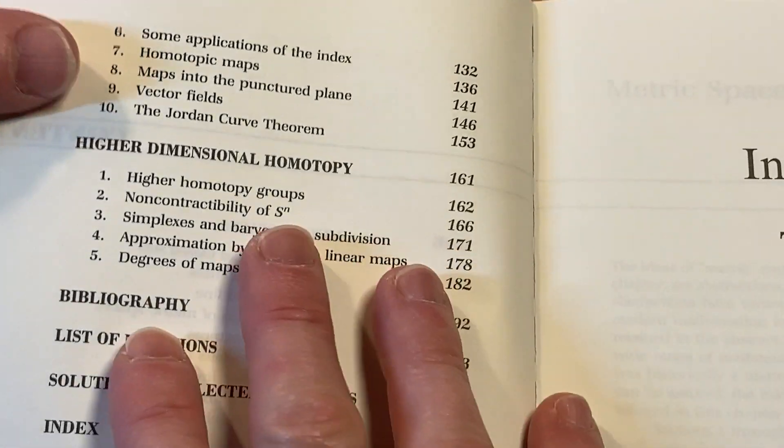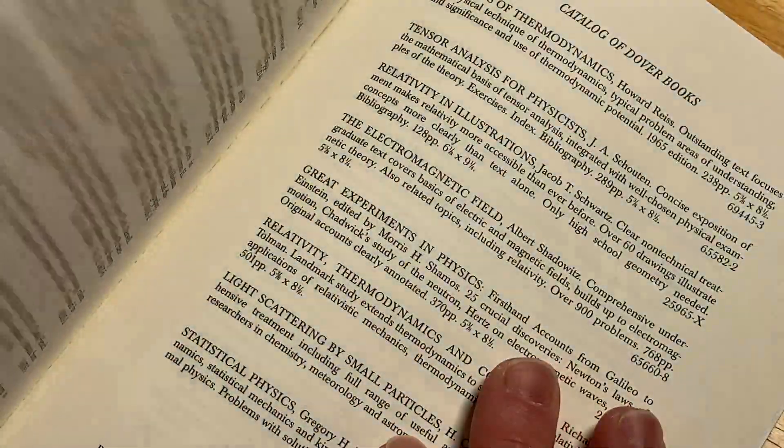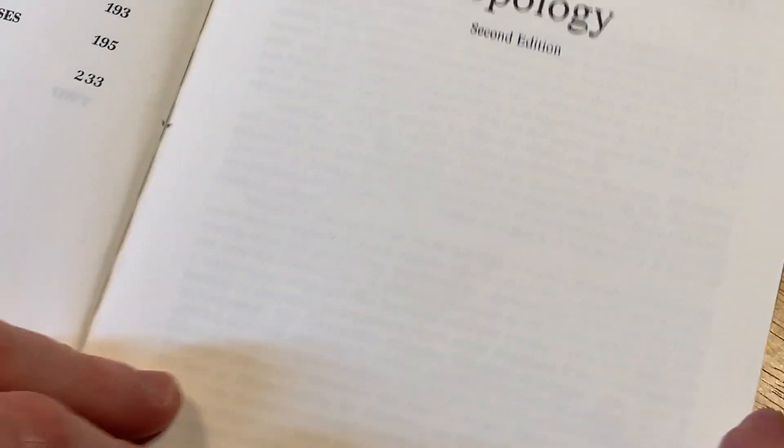Homotopy theory, okay? And then we have higher dimensional homotopy. And then we have solutions to selected exercises, as you can see. And again, I see none missing. I mean, it'll say follow the hint. Maybe that's what's missing. But yeah, they're really good about it.